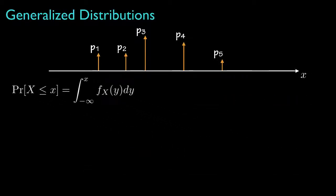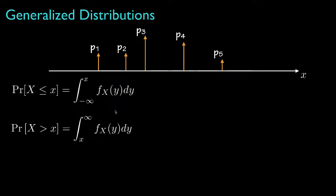Now because of the way we've defined the Dirac delta function, the probability that the random variable takes a value less than or equal to some value x is simply the integral of this generalized density up to the point x. And the probability that we're greater than x can be evaluated as the right tail integral.